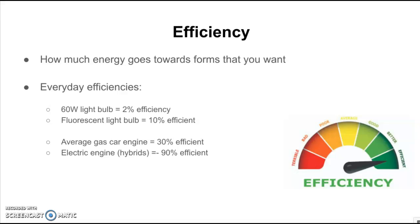Electric engines or hybrids can be up to 90% efficient. Notice that these efficiencies never go above 100% — that is the cap. Above 100% would mean that energy is magically being created, and we know that can't be true.